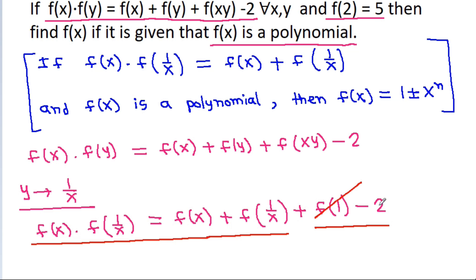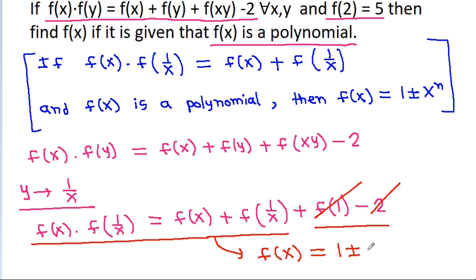So 4f(1) equals 8, giving f(1) equals 2. Therefore f(1) equals 2, the other solution f(1) equals 1 is eliminated, and from the known result we can say that f(x) is equal to 1 plus or minus x to the power n.